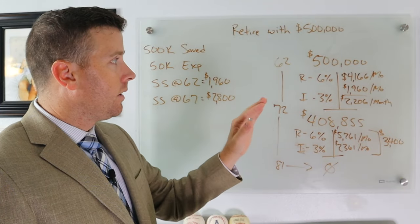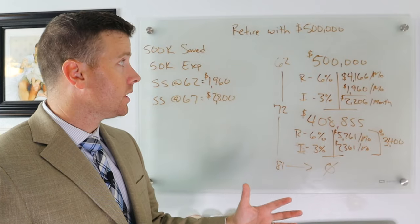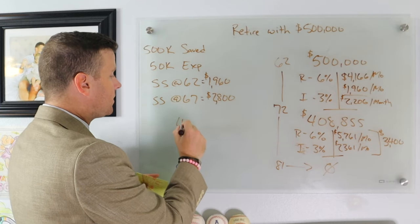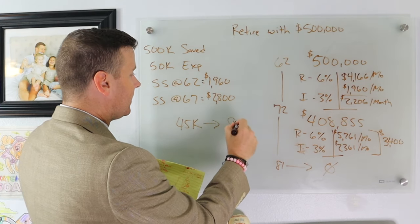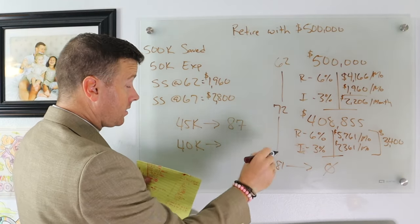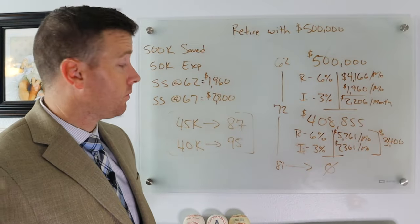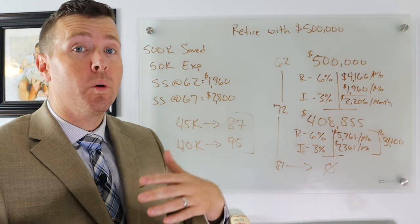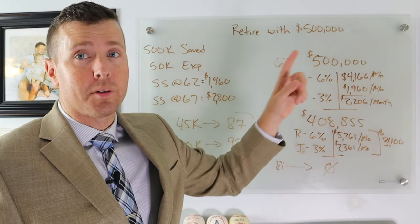Here's what I want you to think about. The expenses are $50,000 a year - that's the average expenses for someone in their 60s who retires. But what if you take your expenses down to $45,000? This money doesn't run out until age 87. And if you're able to take your expenses down to $40,000, this scenario works until age 95, which makes me feel a lot better as a financial advisor.